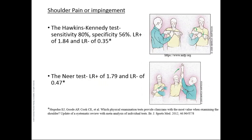Most special tests have good positive likelihood ratios but not so good negative likelihood ratios — meaning if they're positive, you're more confident. For shoulder impingement, the Hawkins-Kennedy test has a positive likelihood ratio of 1.84 and negative of 0.35, with sensitivity of 80% and specificity of 56%. The Neer test has a positive likelihood ratio of 1.79 and negative of 0.47. When a patient is positive, you suspect impingement, but there may be several pathologies responsible, leading to false positives or negatives.